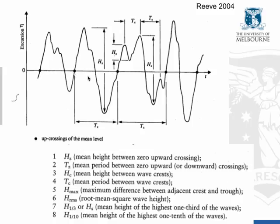For each wave, we can measure the wave height shown here as Hz and the wave period. We can do that again and again for different waves based on these upward crossings, and from that we can calculate the mean wave height and the mean period.